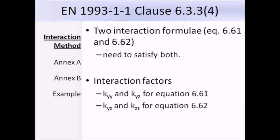Clause 6.3.3 Part 4 gives us two interaction formulae which need to be satisfied: equations 6.61 and 6.62. We are going to need interaction factors for these formulas. So we need KYY and KYZ for equation 6.61, and KZY and KZZ for equation 6.62.